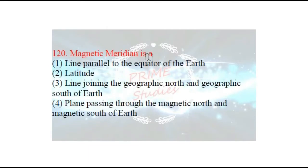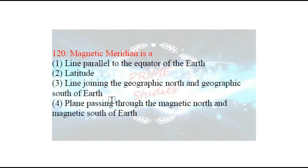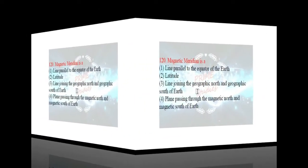Next question: magnetic meridian is what? Jo magnetic meridian hai, woh kya hota hai? The options are: line parallel to the equator, latitude, line joining geographic north and geographic south, or plane passing through magnetic north and magnetic south. The answer is: jo aapka magnetic meridian hota hai, yeh ek line hoti hai jo magnetic north aur magnetic south ke through jaati hai — earth ke andar — usko hum bolte hain magnetic meridian.